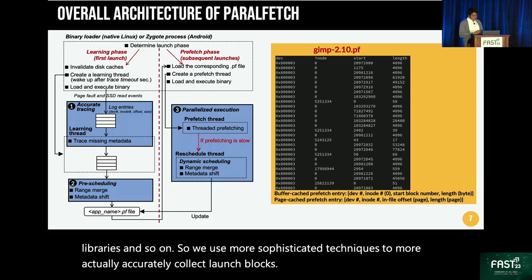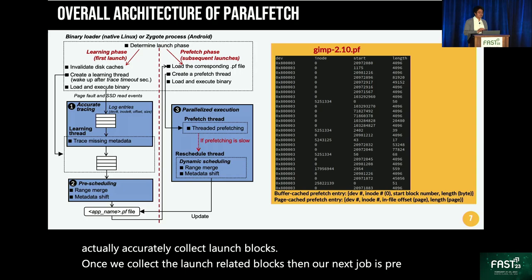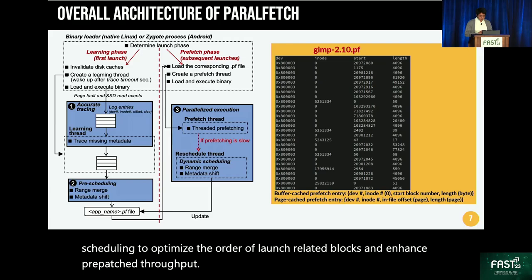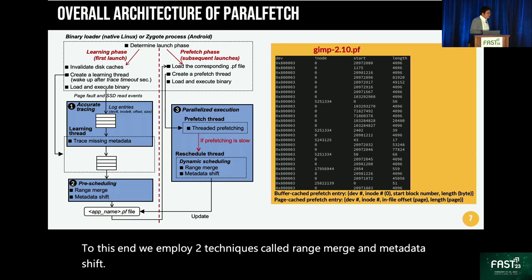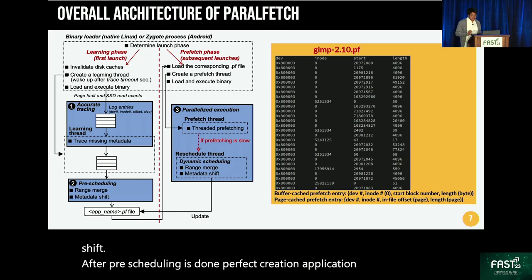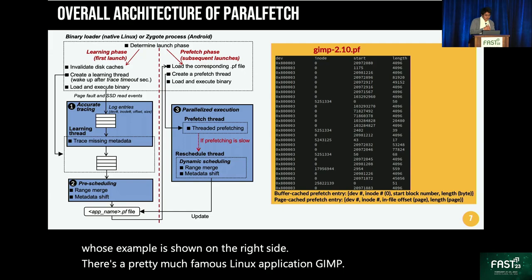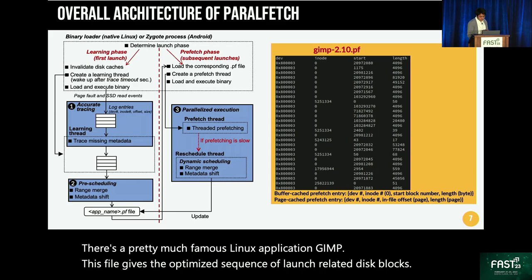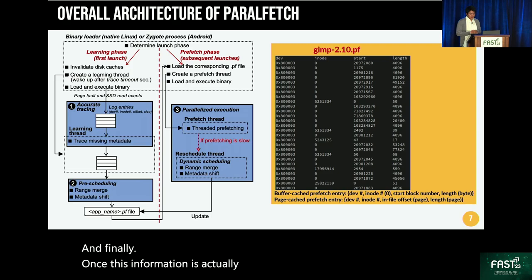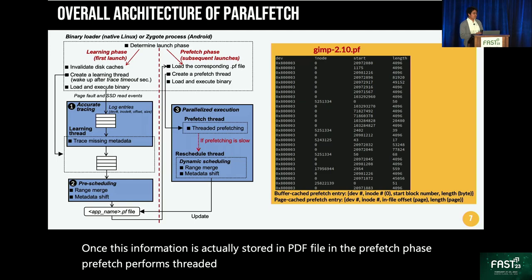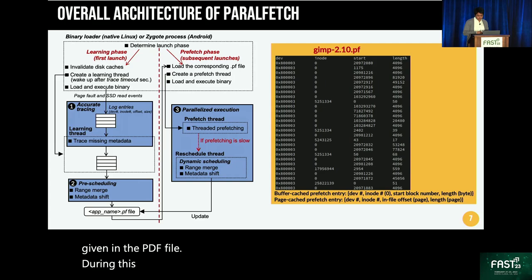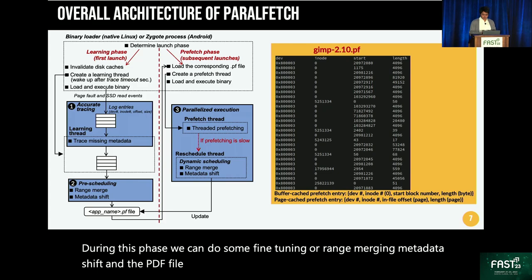Once we collect the launch-related blocks, our next job is pre-scheduling to optimize the order of launch-related blocks and enhance prefetch throughput. To this end, we employ two techniques called range merge and metadata shift. After pre-scheduling is done, ParaFetch creates an application-name dot pf file — an example is shown on the right side for the famous Linux application GIMP. This file gives the optimized sequence of launch-related disk blocks. In the prefetch phase, ParaFetch performs threaded prefetching according to the launch sequence in the pf file, with fine-tuning of range merge and metadata shift, updating the pf file accordingly.